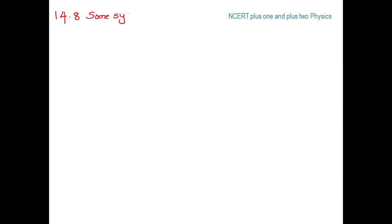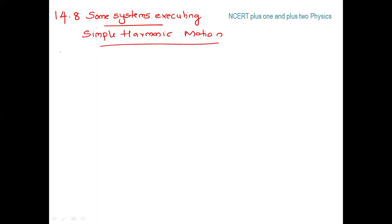Now we move to the next section, which is Section 14.8 — Some Systems Executing Simple Harmonic Motion. The first subsection is 14.8.1: Oscillations Due to a Spring.